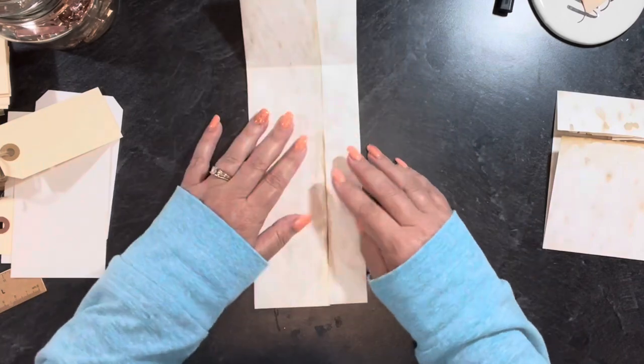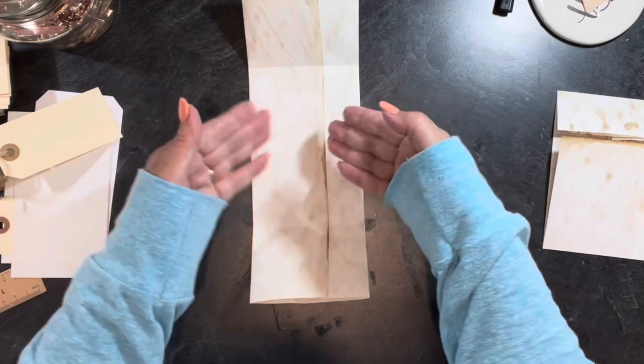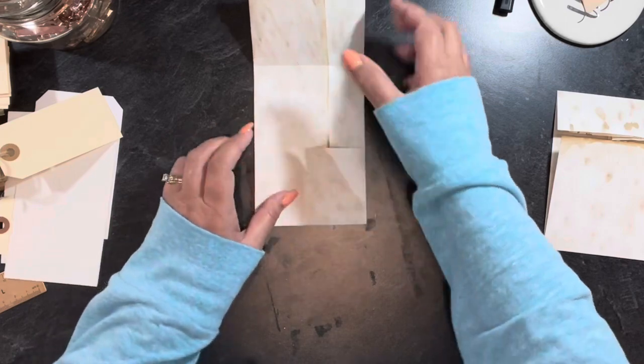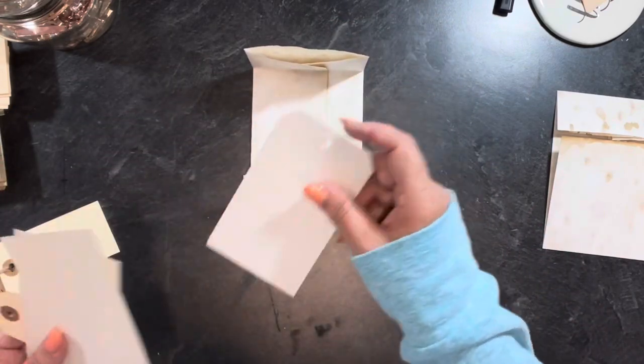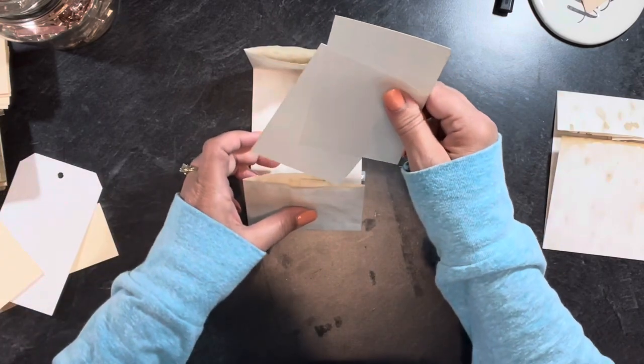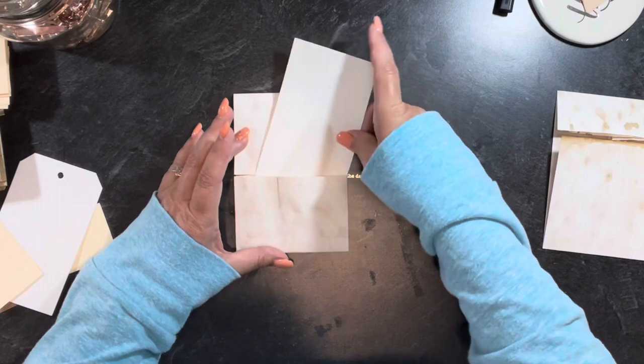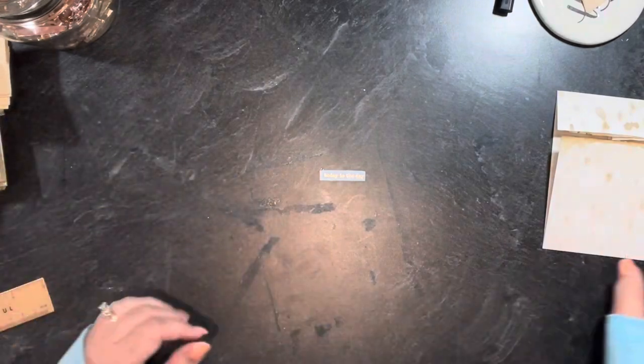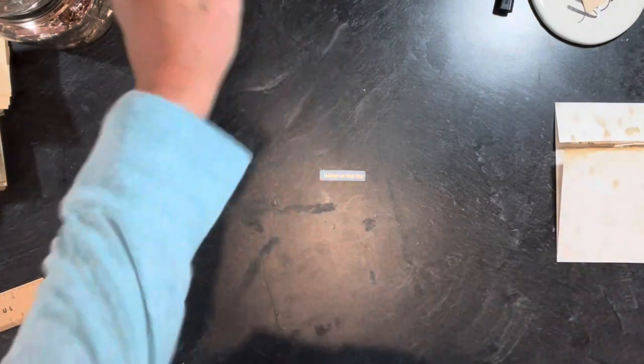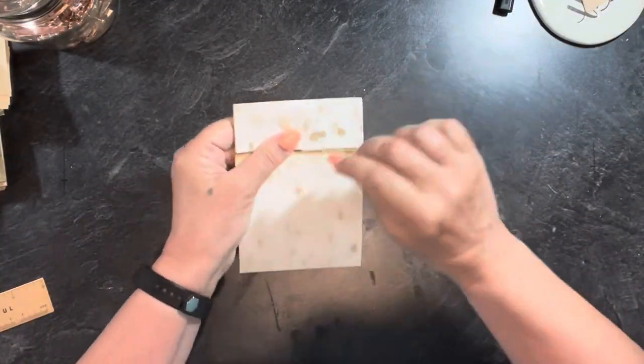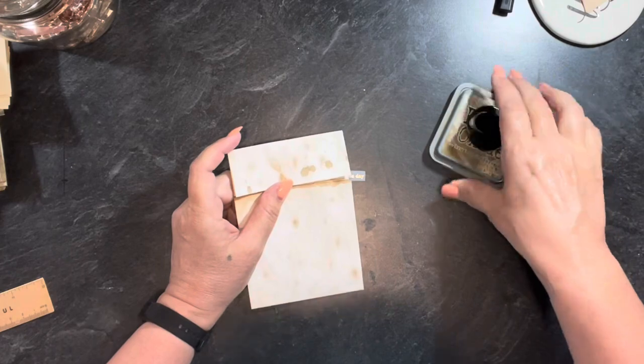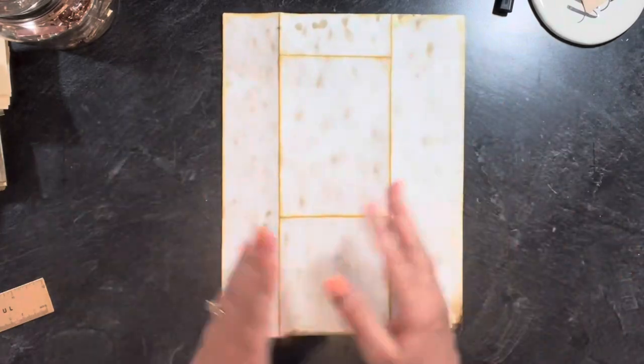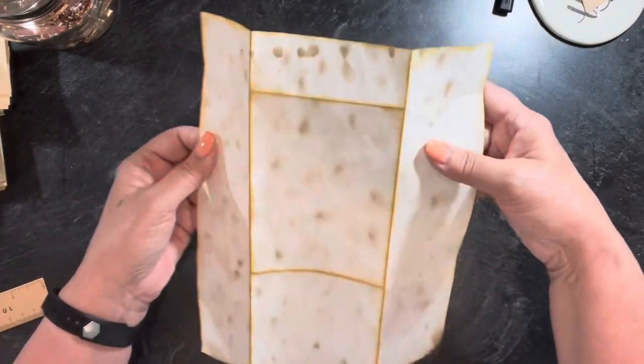This could be a free floating thing that just goes anywhere in your journal. When you take out this one and open that up and take out this one and open this up, you've got both sides still completely open for writing space. I'm going to show you my next steps with this one.